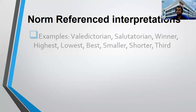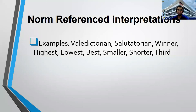Examples may include valedictorian, salutatorian, winner, highest, lowest, best, smaller, shorter, third, and many more. As long as there is ranking, comparison, and order — that is norm reference interpretation.